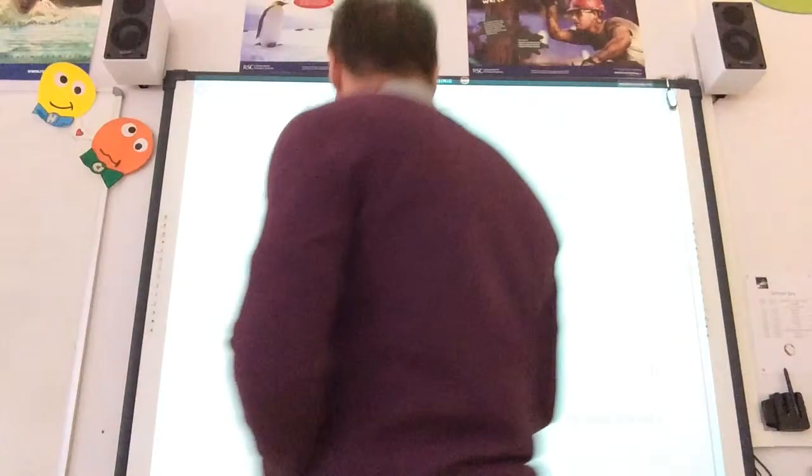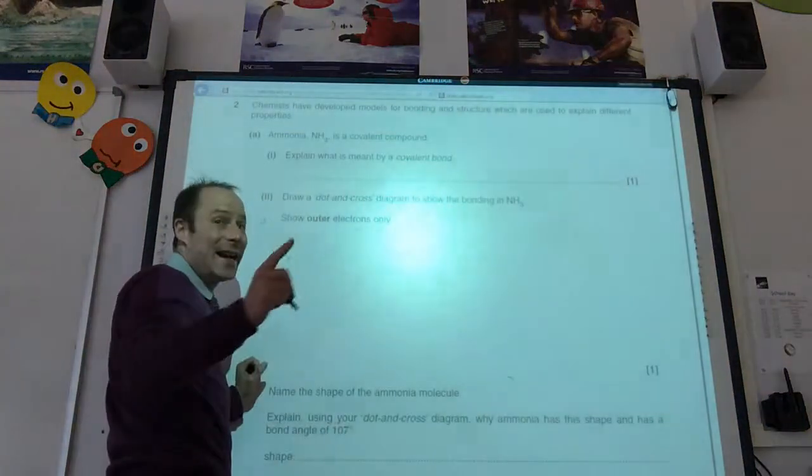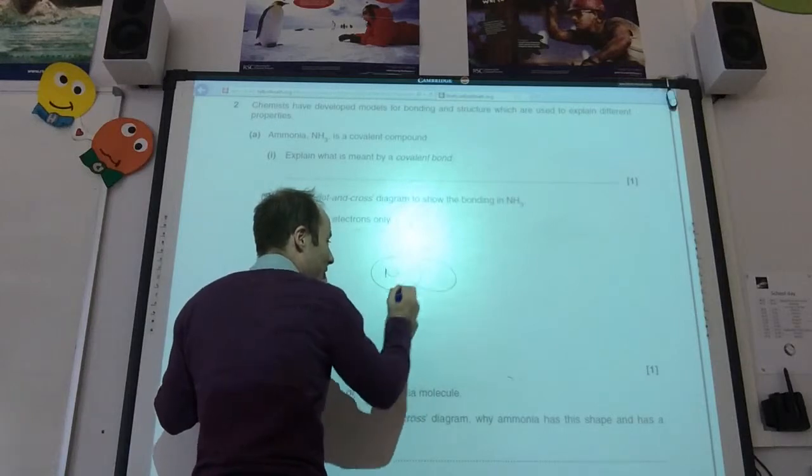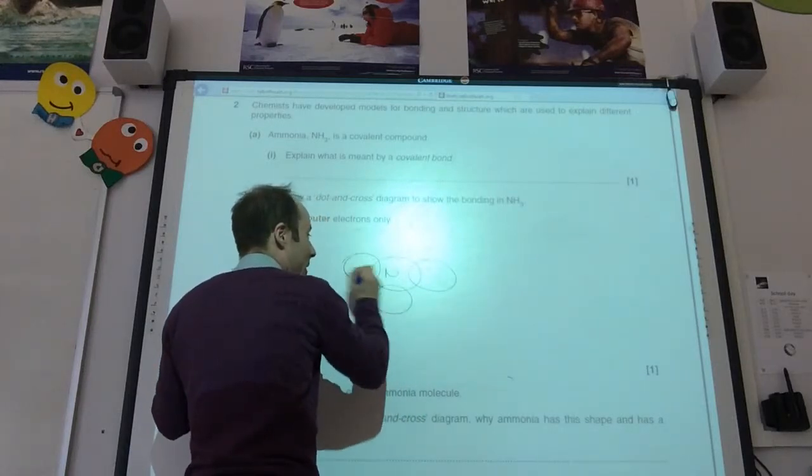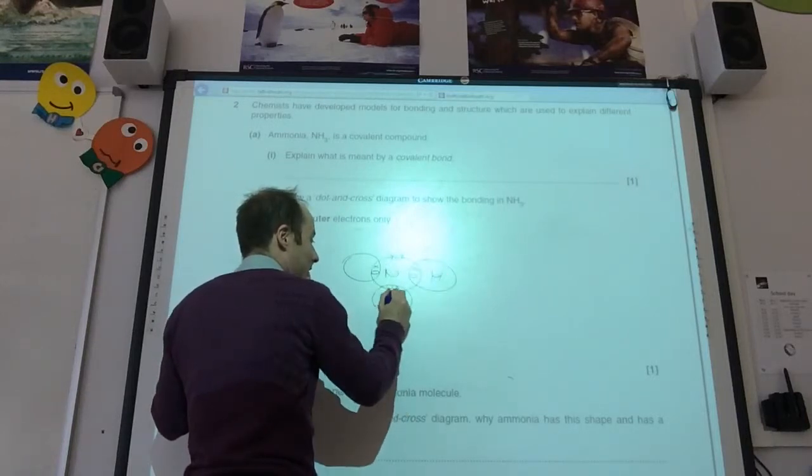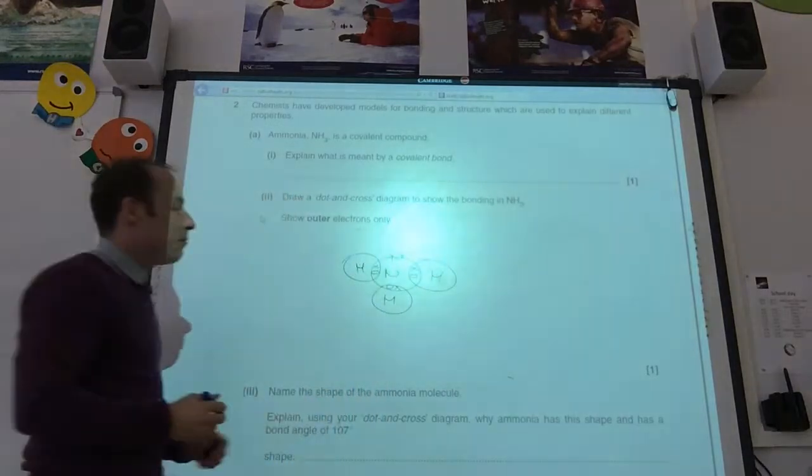Right, draw the dot-cross diagram for ammonia, show the outer electrons. Dead easy. You know that nitrogen has got 5 electrons. So you've got your lone pair there, like so. Then you put your hydrogen in, and that is ammonia.